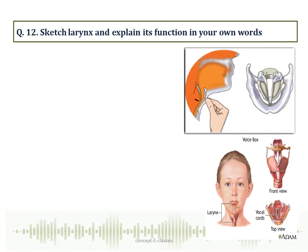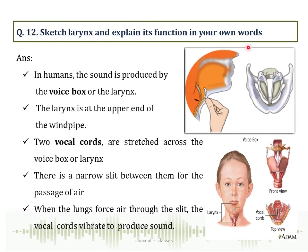Question number 12: Sketch the larynx and explain its function. You should draw an image of the larynx and label the vocal cords. In humans, sound is produced by the voice box or larynx, situated at the upper end of the windpipe. Two vocal cords are attached to the larynx with a narrow slit between them for the passage of air. When the lungs force air through the slit, the vocal cords vibrate to produce sound.